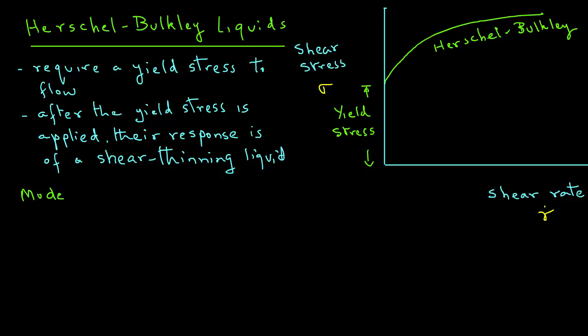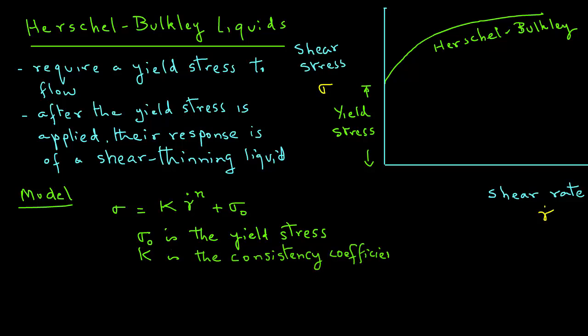The mathematical model for this behavior can be shown as sigma equals k times gamma dot raised to power n plus sigma zero. Here sigma zero is the yield stress at zero shear rate, k is the consistency coefficient, and n is the flow behavior index.